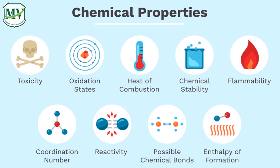Examples of chemical properties of a substance include toxicity, oxidation states, heat of combustion, chemical stability, flammability, coordination number, reactivity, possible chemical bonds, and enthalpy of formation.